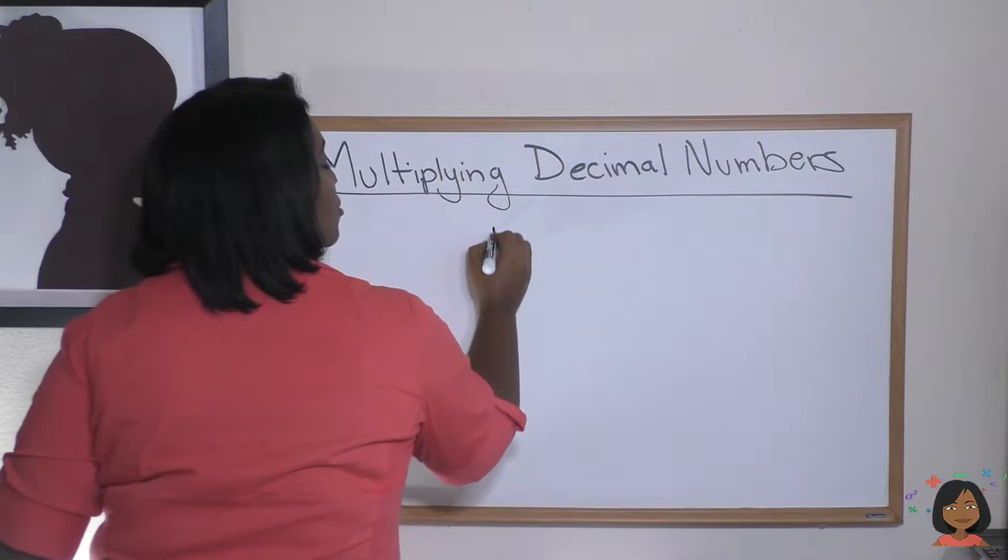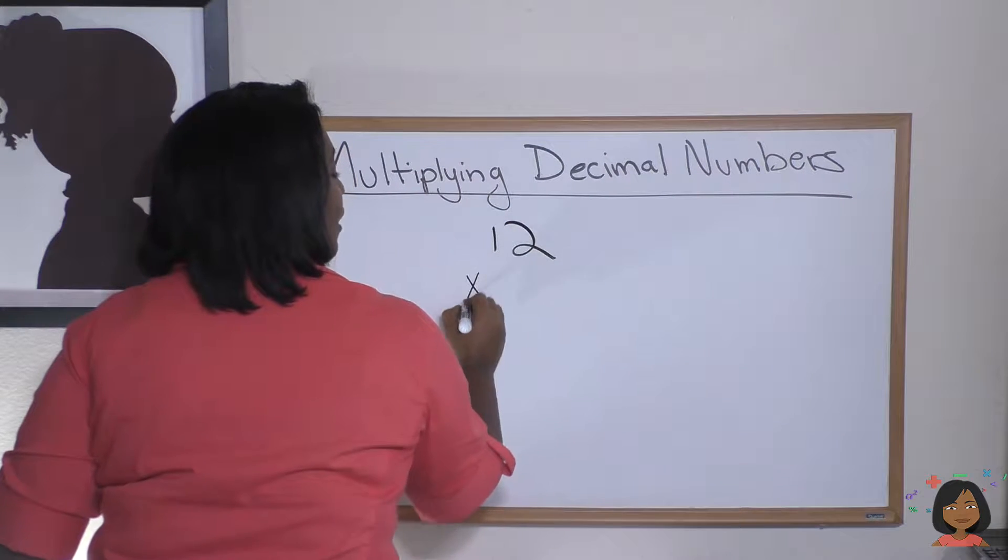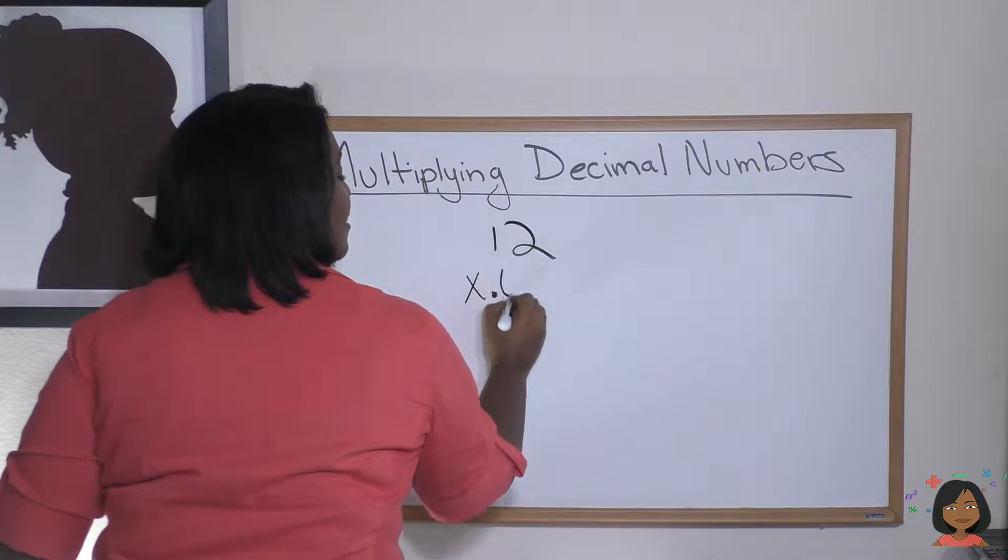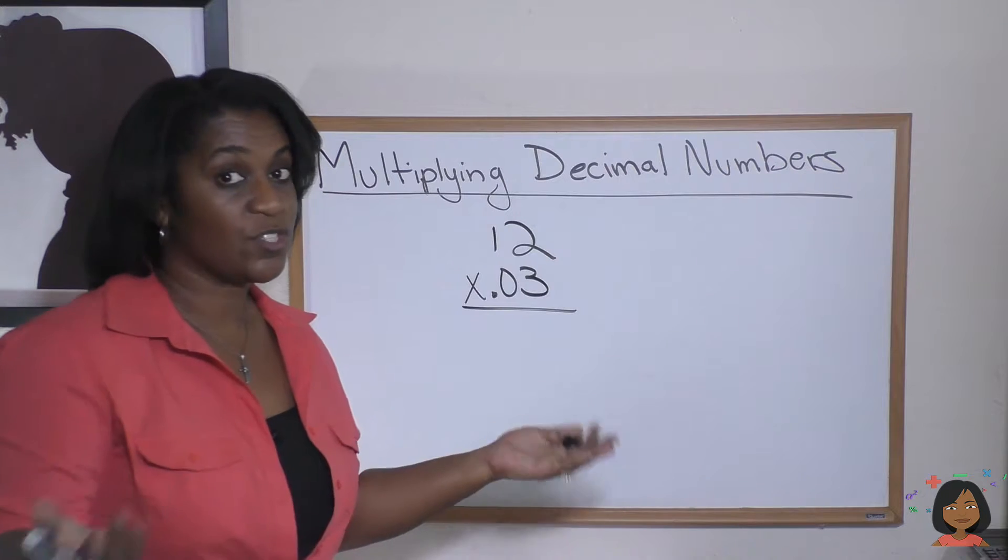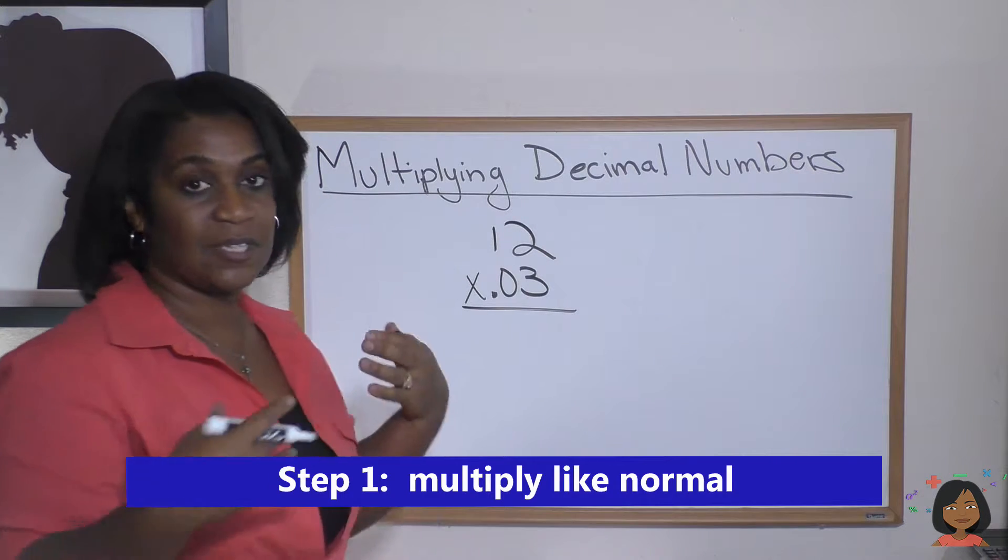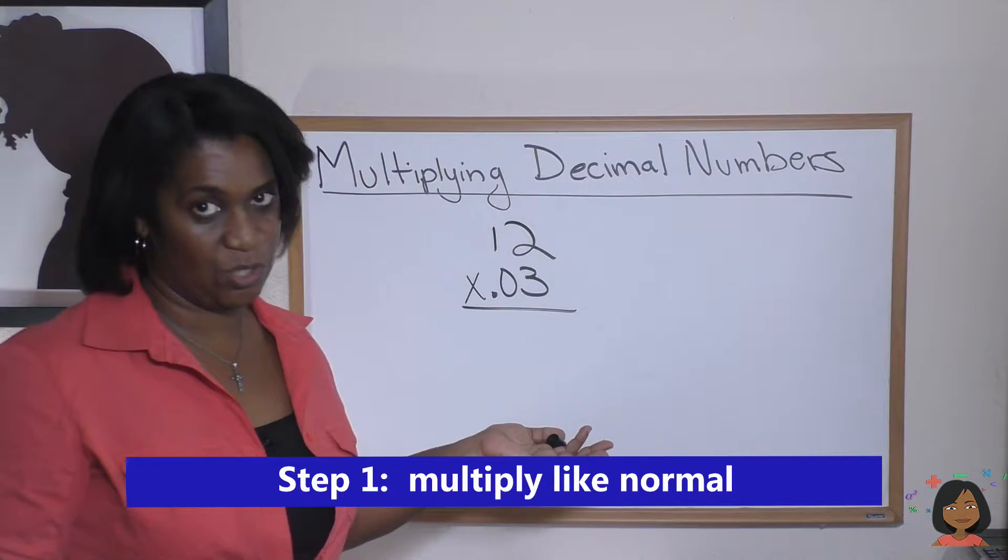Let's say I had the number 12 and I want to multiply it times the decimal three hundredths, 0.03. So step one is let's just do our math the way we do our math.